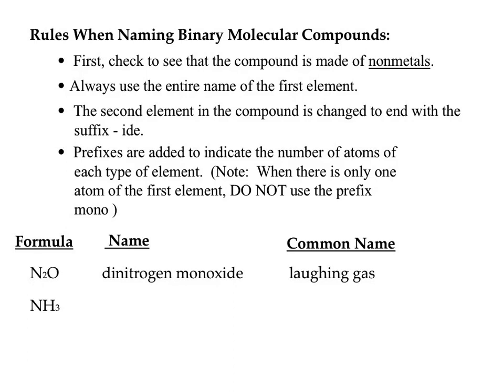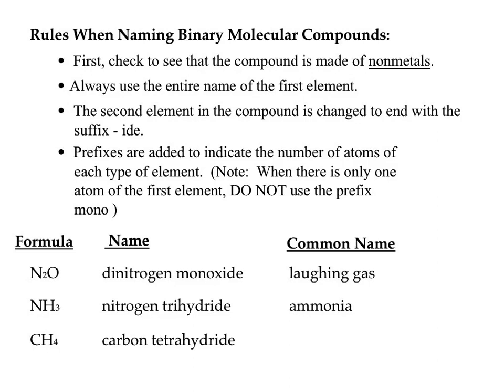Next one: NH₃ — what would NH₃ be called? Nitrogen trihydride. Anyone think they know what this is more commonly called? This is actually ammonia, which we've known about for a very long time. Last one: CH₄. That would be carbon tetrahydride, and this is more commonly known as methane, or natural gas sometimes.